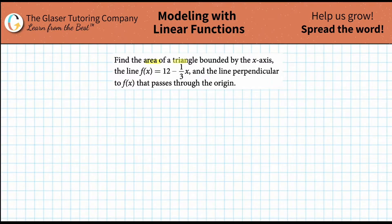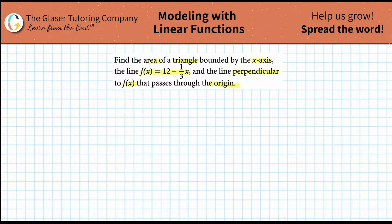Find the area of a triangle bounded by the x-axis, the line f of x is equal to 12 minus one-third x, and the line perpendicular to f of x that passes through the origin.